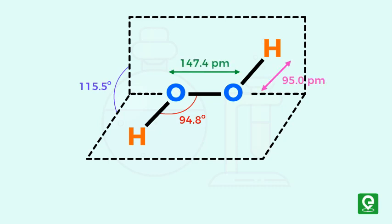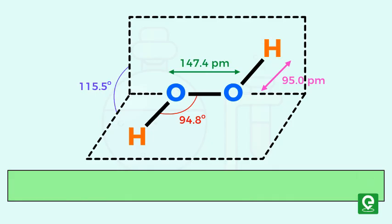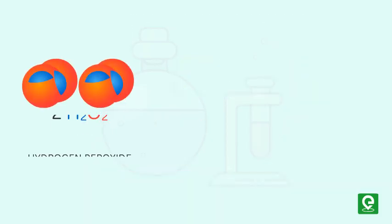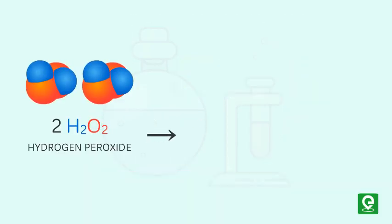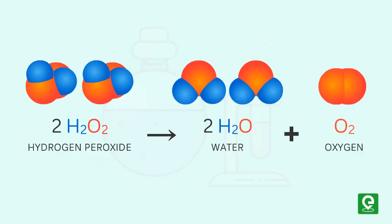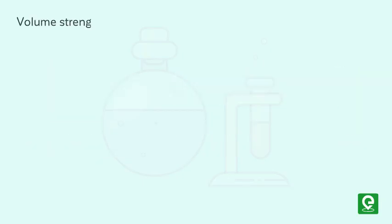The structure of H₂O₂ is not a planar molecule but instead has a twisted symmetry. Volume strength is a unique method of representing the concentration of hydrogen peroxide. When hydrogen peroxide decomposes, it is converted to water with the liberation of oxygen gas.